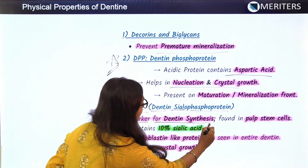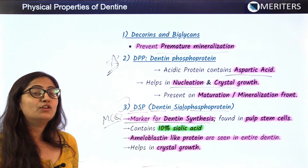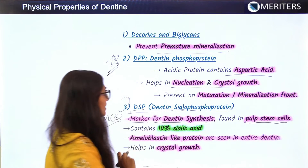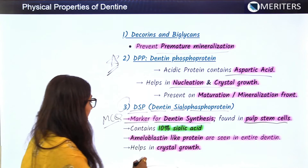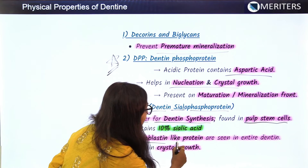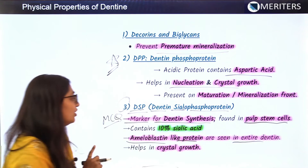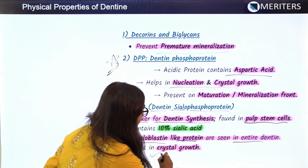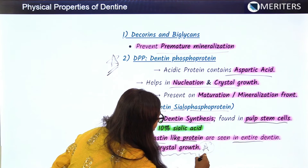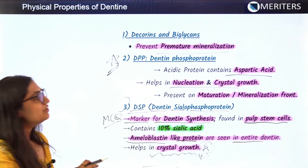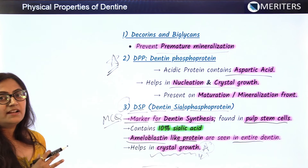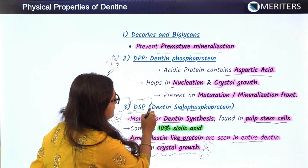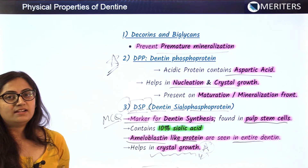Dentine sialophosphoprotein (DSP) is the marker for dentine synthesis — this is an important MCQ point. It is found in pulp stem cells, contains 10% sialic acid, and ameloblastin-like proteins are seen throughout the dentine. These all help in crystal growth, and the main formation of dentine occurs due to these non-collagenous proteins, glycoproteins, and proteoglycans.